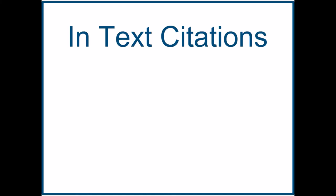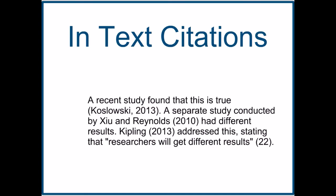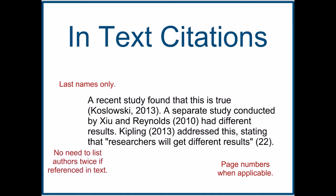First, in-text citations. In-text citations should include the author's last name, the year the source was published, and a page number if you're citing a specific part of the larger work. If you're summarizing the entire source, however, you do not need to include a page number. You also don't need to include an author's name twice, so if you reference them by name in your text, you do not need to include their name again in the parentheses.